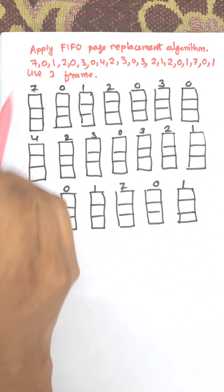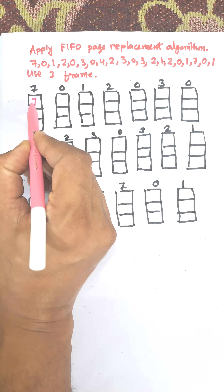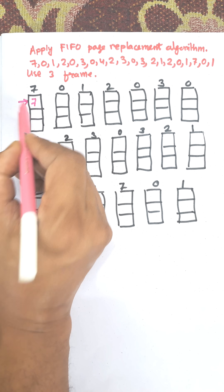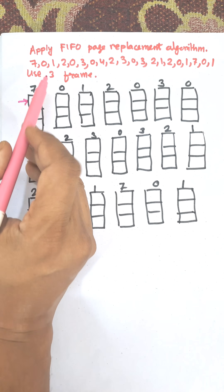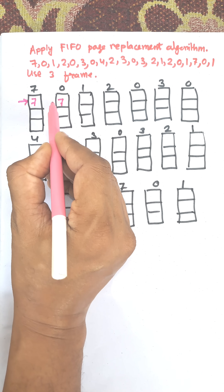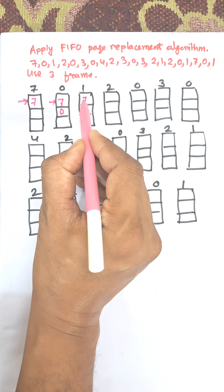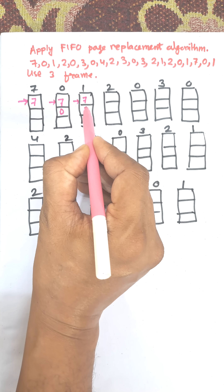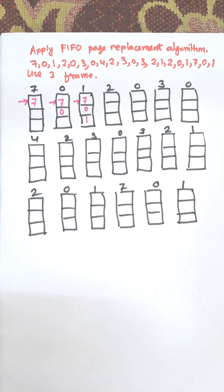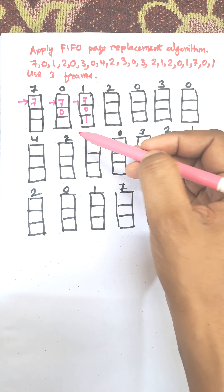The first element inserted is 7. Since 7 is the first element, it is pointed to by a pointer. Next we insert 0, then 1, giving us 7, 0, 1 in the three frames. At this point the memory is already filled with these pages.